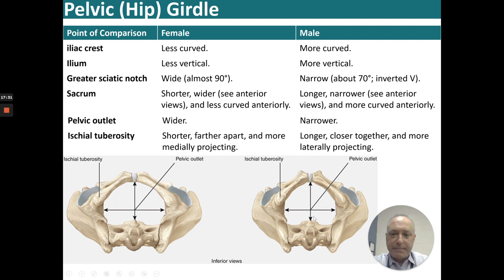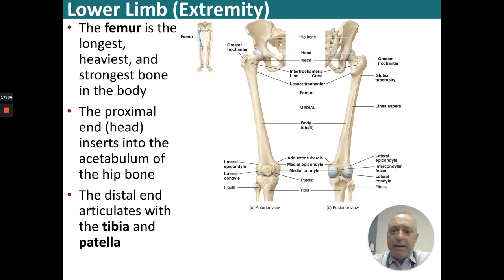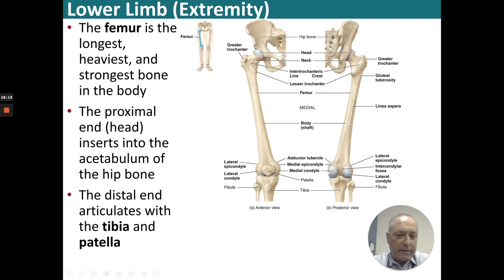Moving distally from the hip is the femur — the longest, heaviest, strongest bone in the body. The proximal end has a head that inserts into the acetabulum of the hip. The distal end articulates with the tibia and patella. On the posterior view, we can see the lateral and medial epicondyle and condyle articulating into the tibia.